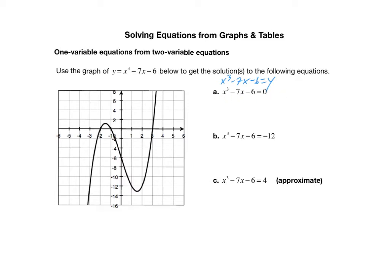So let's find the points that have a y value of 0. If you trace along this curve, you can see this one right here has a y value of 0, this one has a y value of 0, and this one has a y value of 0. So there are three different points — let's note them in blue. The corresponding x values on these points are negative 2, negative 1, and 3. So x equals negative 2, negative 1, and 3 are the solutions to this equation.